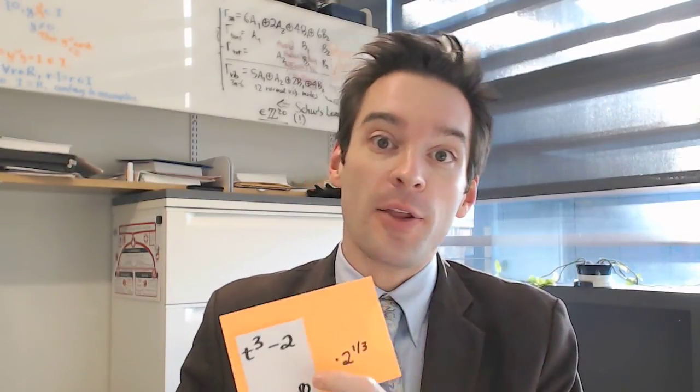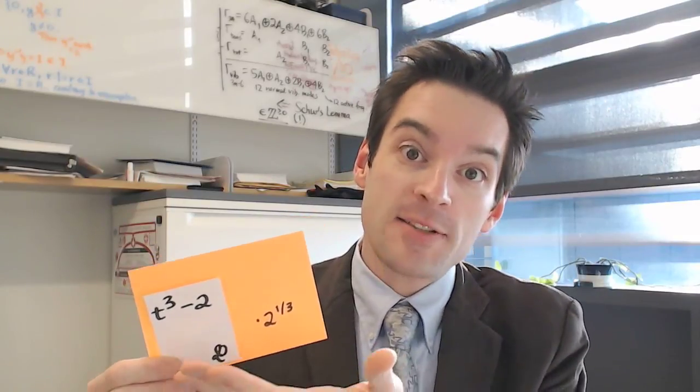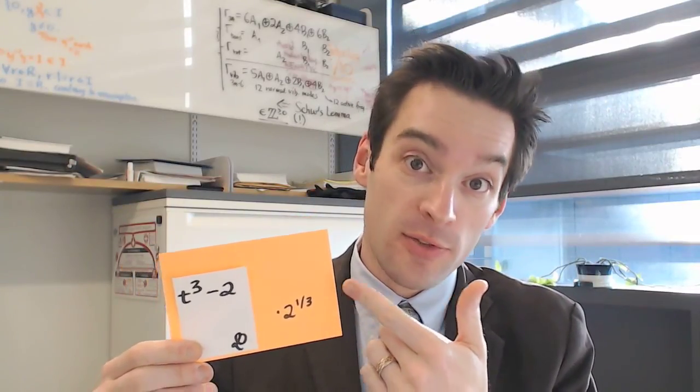Our goal in the study of field extensions is to figure out how to take a polynomial which has no roots inside of a field and extend that field so that that polynomial then has roots. We saw an example in the last video of taking the polynomial t³ - 2 over the rationals and then extending the field of rationals so that it included one of the roots, 2^(1/3), of that polynomial.